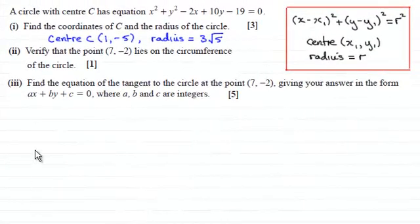Hi there. Now before we start the last part of this question, just a quick reminder that we were given this circle with centre C that has equation x squared plus y squared minus 2x plus 10y minus 19 equals 0.